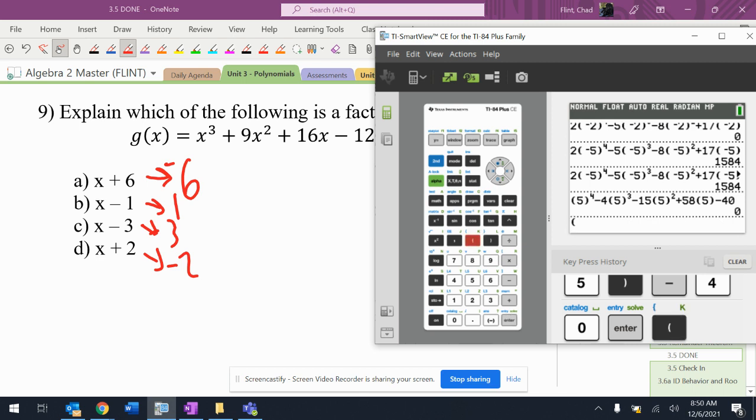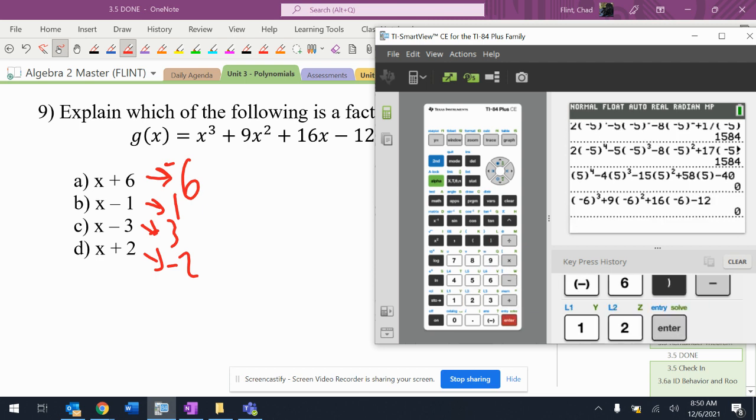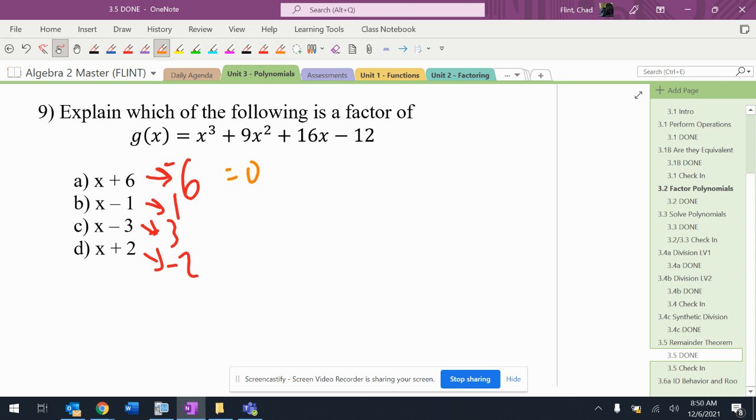Alright, so negative 6 to the third plus 9 times negative 6 squared plus 16 times negative 6 minus 12. Oh, it is. So it's a factor.